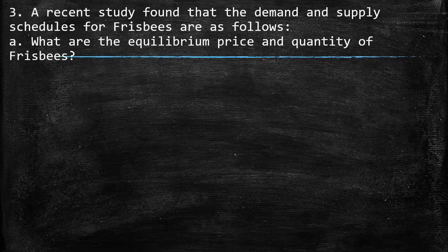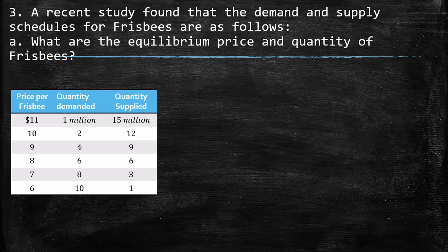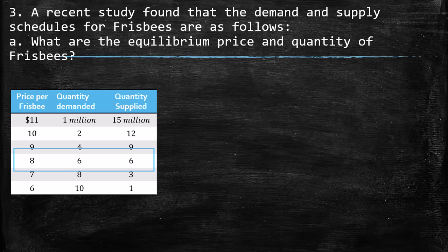Third, a recent study found that the demand and supply schedules for Frisbees are as follows. What are the equilibrium price and quantity of Frisbees? The supply schedule has the price for Frisbees from $11 to $6. The quantity demanded goes from 1 to 10 million as price goes down, which reflects the law of demand. The supply side reflects the law of supply — when the price is lower, the quantity offered decreases. Equilibrium is where demand equals supply, which occurs at a price of $8 with a quantity of 6 million.